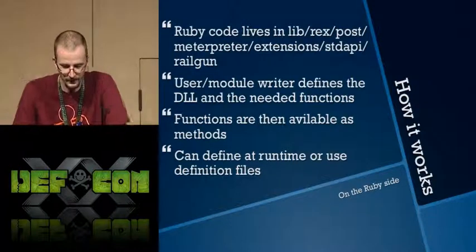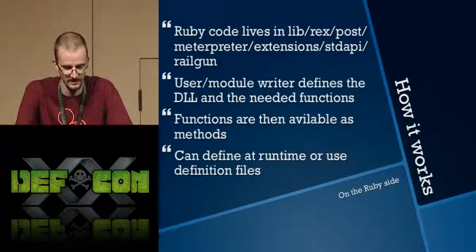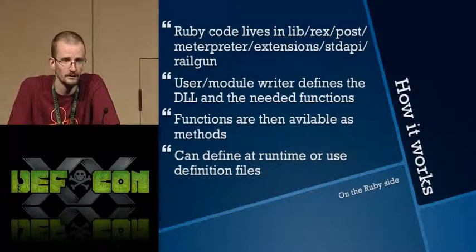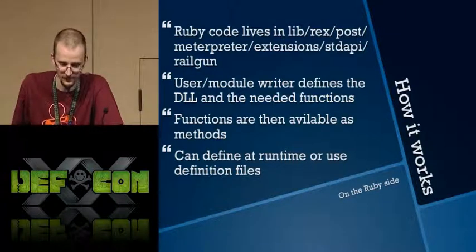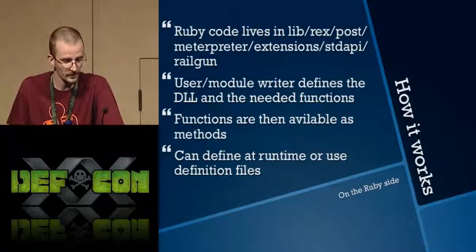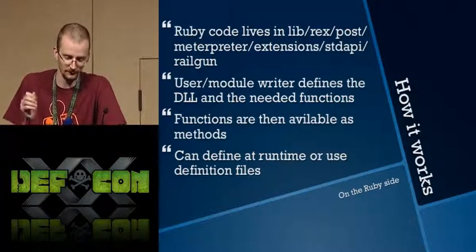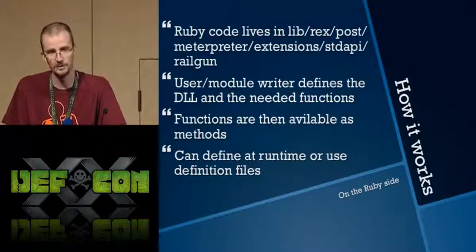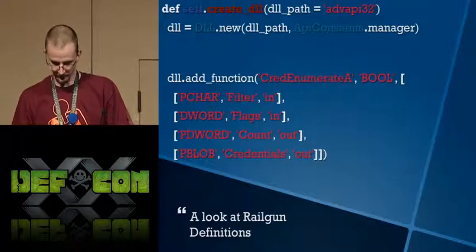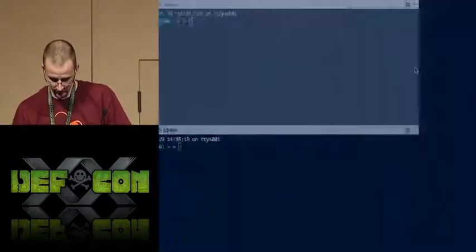On the Ruby side, we have a bunch of libraries that live in the rex library under post, meterpreter, extension, standard API, Railgun. The actual code for the Ruby side of the API lives there, but also the definitions for these libraries and functions exist there. When writing a module, you can define the DLL and functions within your module, or you can build it right into Railgun by creating definition files. Here's a brief look — this is the definition for the AdvAPI32 DLL.